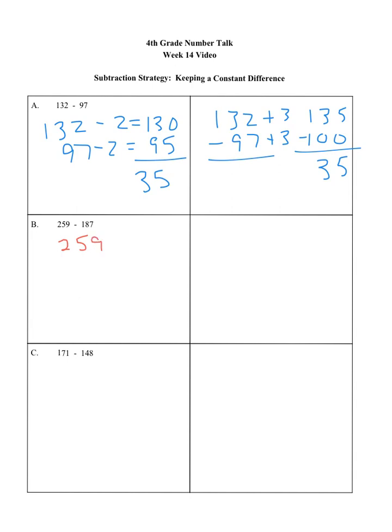So, 259 minus 187. So let's try that first. So the subtrahend, let's look at making this a landmark number, an easy number to work with. So let's make this into 190. Let's add 3 there. Let's make this into 262. We subtract the 2, we have a difference of 72.